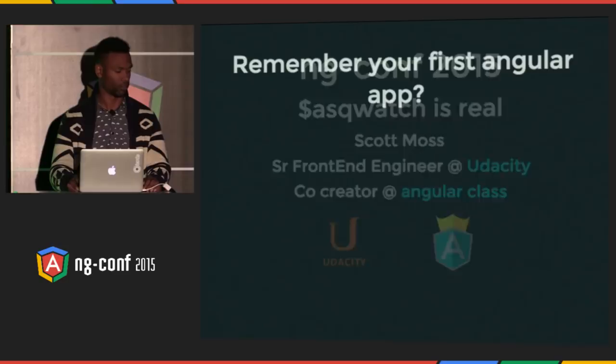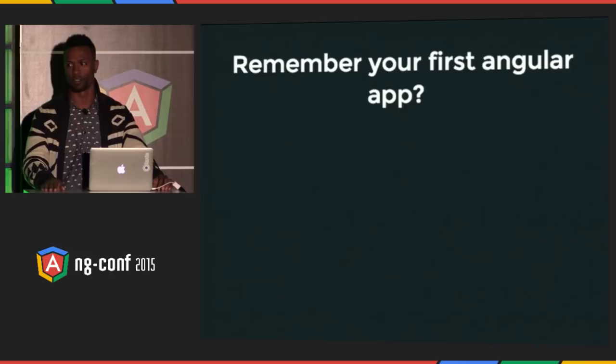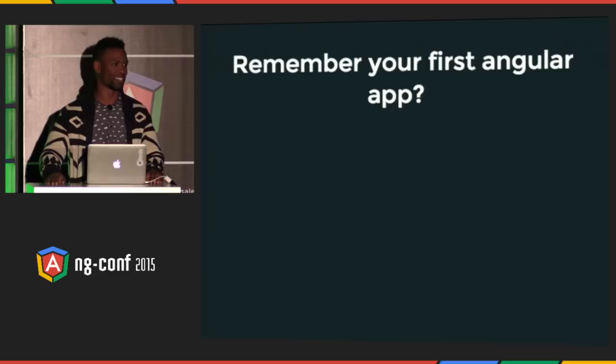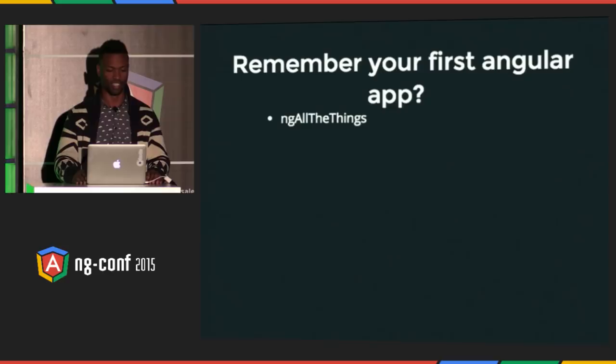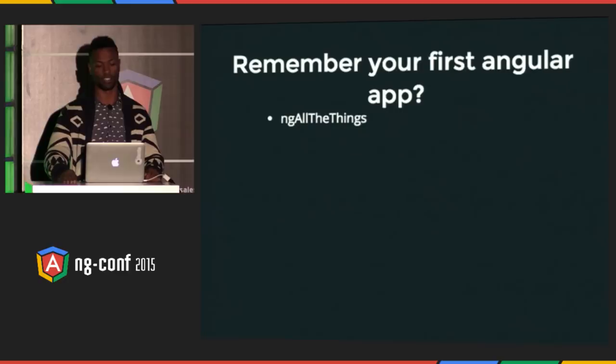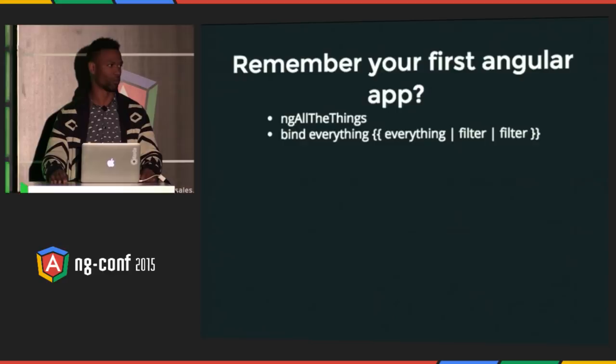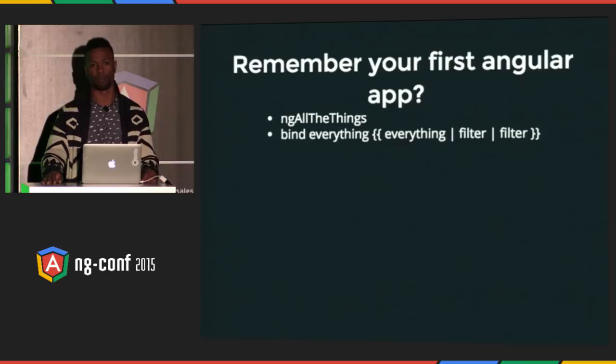Let's take a trip — remember the first time you made an Angular app? You were like, 'Oh my god,' you called your grandma: 'Grandma, we don't have jQuery anymore, we can use directives, it's so declarative!' So you would just ng-all-the-things. Every single thing with ng on it, you'd use it because that's what the docs say. You'd bind everything with that sweet mustache template system, and instead of writing static HTML you'd write it in JavaScript and bind it anyway even though it's never going to change.